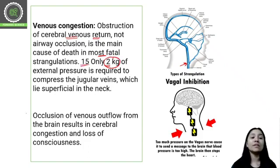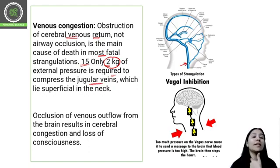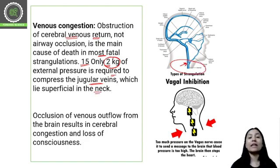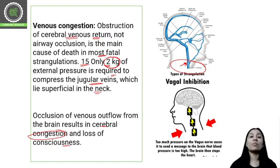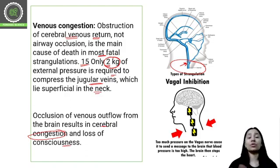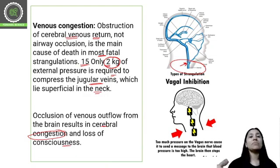A minimum of 2 kg and maximum of 15 kg of pressure is required to compress the jugular veins. The jugular veins lie superficially in the neck and are the main veins taking blood and oxygen to the brain. Occlusion of venous outflow from the brain results in cerebral congestion, loss of consciousness, and with more pressure, the respiratory centers stop or a heart attack can occur.